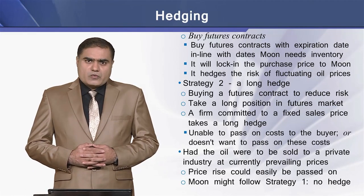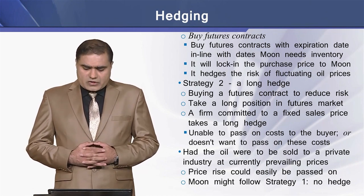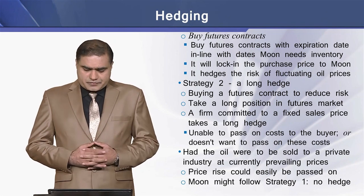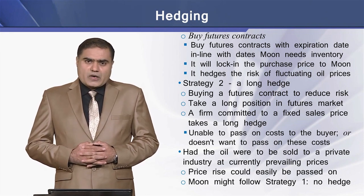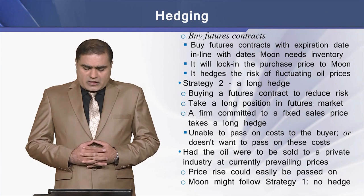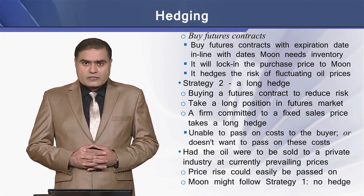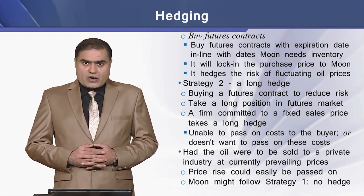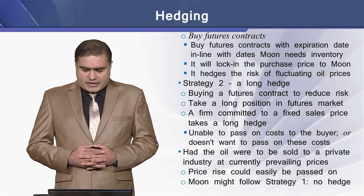The second option for Moon is to buy future contracts with an expiration date aligned with the date Moon needs to deliver the oil. This locks in the purchase price for Moon, so Moon will be protected in case there is any rise in price. In this situation, Moon has hedged the risk of fluctuation in oil prices. This strategy — buying future contracts to reduce the risk of a price rise — is called a long hedge. Moon is taking a long position in the future markets.